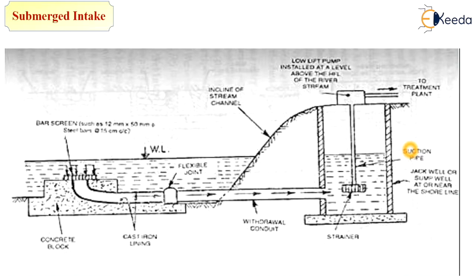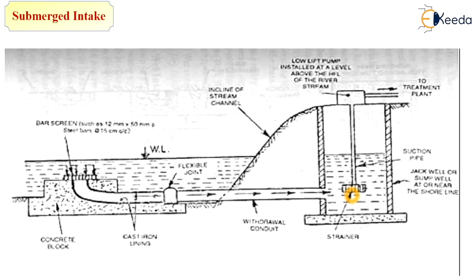This is a typical diagram of a submerged intake. As you can see, this is the water level of the lake and the intake is constructed below this ground level and below this water level. Water is intake from the lake and conveyed to the treatment plant. A strainer is provided in this intake which excludes floating materials and impurities such as silt coming from the lake.